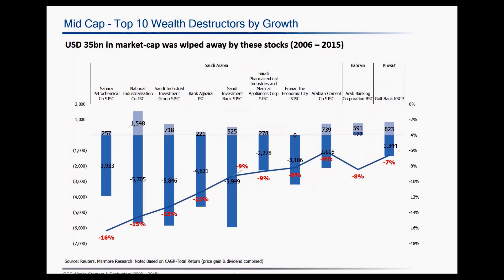Here we have the wealth destructors in terms of total return generated, and Saudi Arabia-based Sahara Petrochemical Company has generated the most negative return of 16% CAGR amongst the group. Sahara Petrochemical is a petrochemical company and most of its wealth destruction has come during the low oil price period, similar to SABIC. Other companies include Arab Banking Corporation from Bahrain and Kuwait. The increase in market cap for Arab Banking Corporation despite its negative performance can be attributed to recapitalization, as this bank has been recapitalized on several occasions throughout the 2006 to 2015 period.